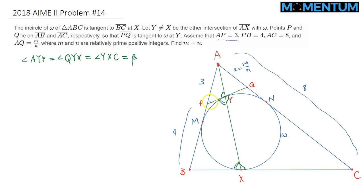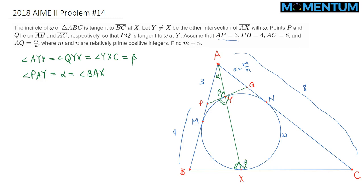Notice that angle PAY — I'll label it as alpha. This angle here is alpha, and it's the same thing as angle BAX. So we have angle alpha at A, and we know these angles marked at Y and X are both beta.